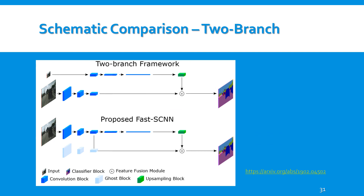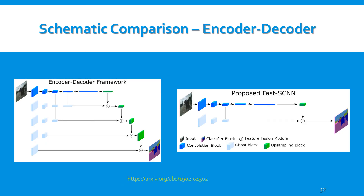I will now give a brief comparison of the Fast SCNN architecture and the two frameworks that inspired it. First, the two-branch framework: the Learning to Downsample module is equivalent to the spatial path of the two-branch framework, while the global feature extractor module is equivalent to the deeper low-resolution branch. In general, Fast SCNN is a special type of encoder-decoder framework. The key difference is that it applies only a single skip connection to reduce computations and memory, while a classical encoder-decoder framework employs multiple skip connections at many resolutions.